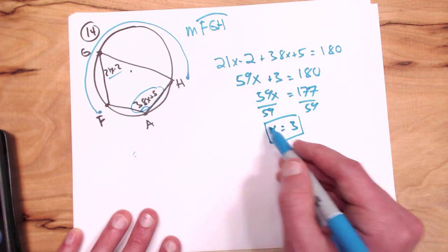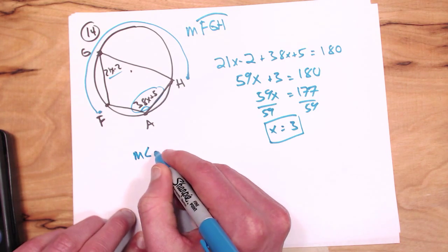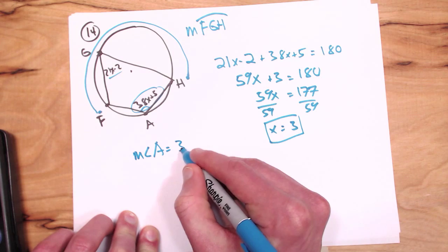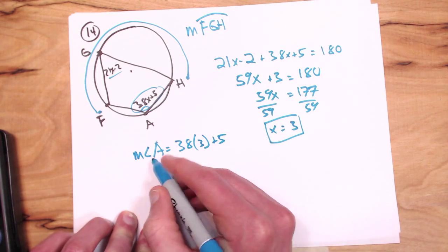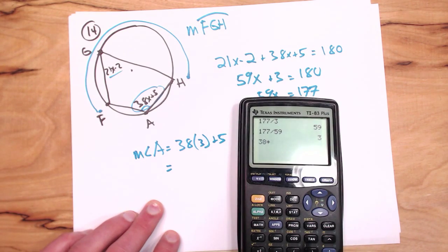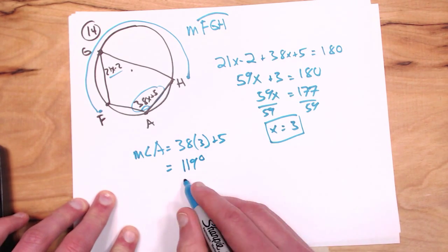So we can find this angle by just plugging X in. So let's try it. I'll say the measure of angle A equals 38X plus 5, so I'll say 38, and we know X is just 3, plus 5, so that equals, calculator time, 38 times 3 plus 5 is 119. Okay, 119 degrees.